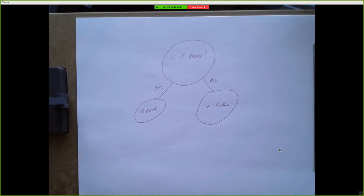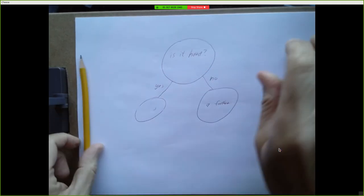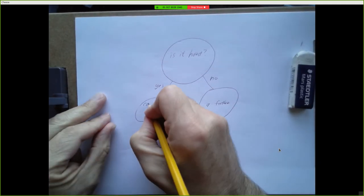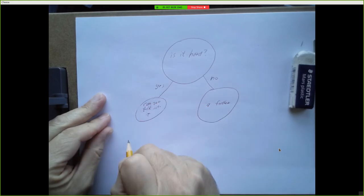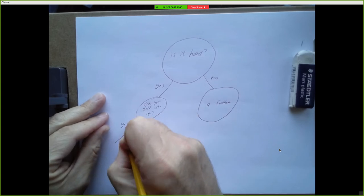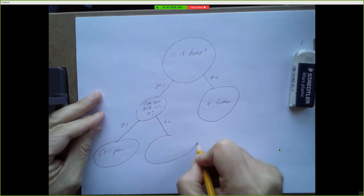Then it says, 'Please give me a question for which yes is a cell phone and no is a rock.' The person supplies a question that differentiates what the computer guessed from what you were really thinking of. You might say 'Can you talk into it?' Now the tree updates — that answer node becomes a question node which says 'Can you talk into it?', with yes leading to cell phone and no leading to rock.